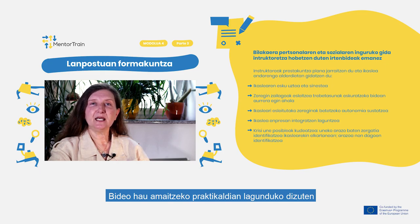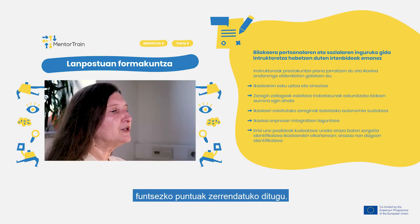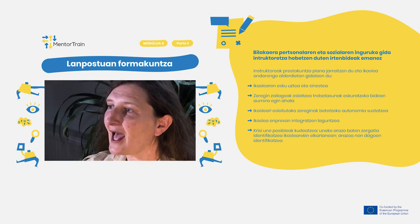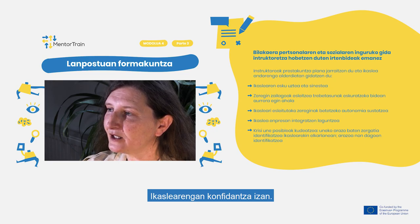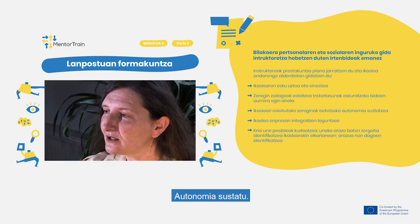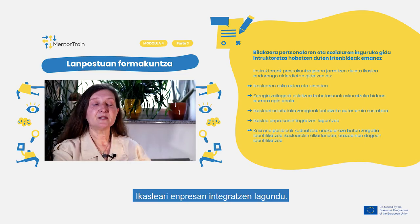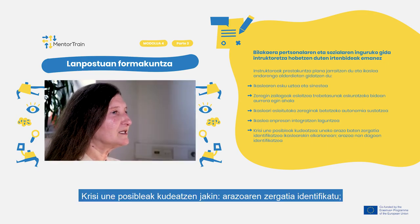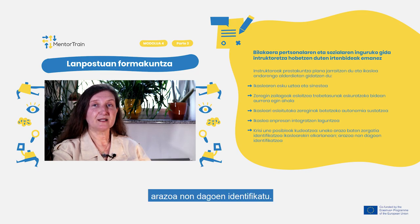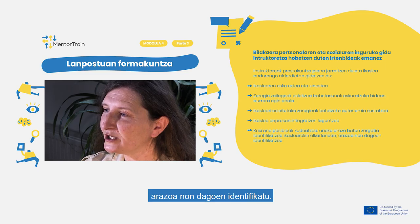We conclude this video with a checklist of some key highlights that will help you throughout your mentoring and apprentices' training process. Those are: entrusting and delegating to the apprentice, assigning more difficult tasks as they progress in the acquisition of skills, fostering autonomy in the performance of assigned tasks, helping the apprentice integrating in the company, managing possible crisis moments, and identifying the cause of current problems together with the apprentice.